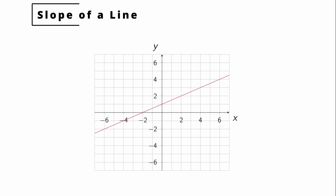If we look at the line and fix a point, for every one unit we go to the right, we go up half a unit. So you can see this: if you go two units to the right, you go exactly one unit up.